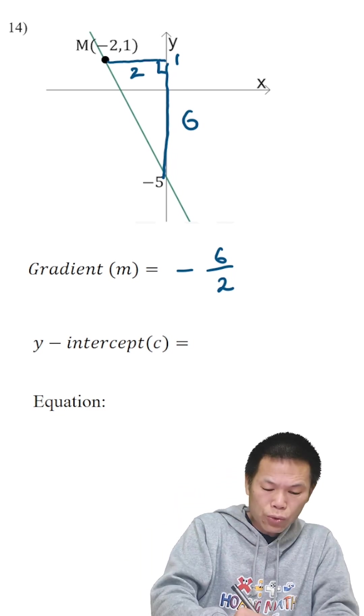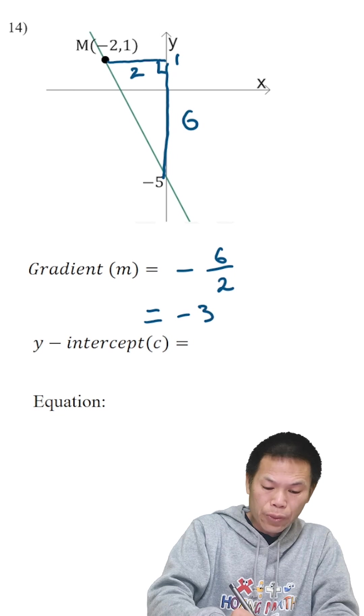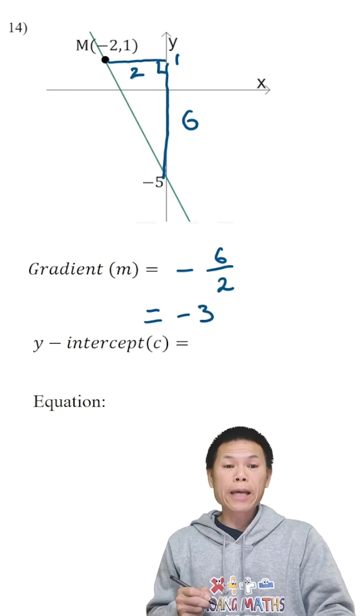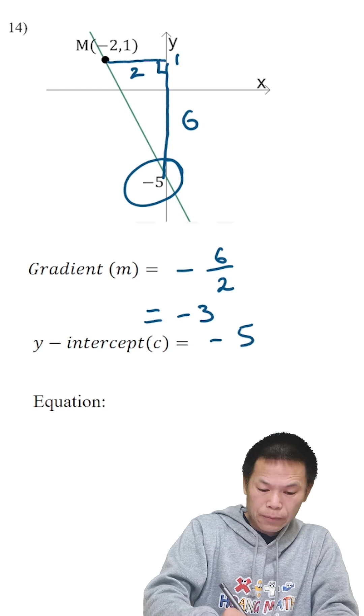So six over two is three. So the answer is negative three. And y-intercept is negative five. So therefore...